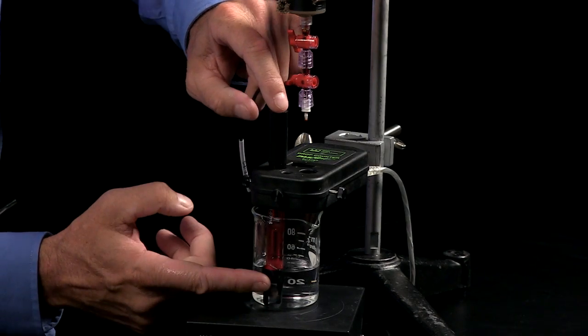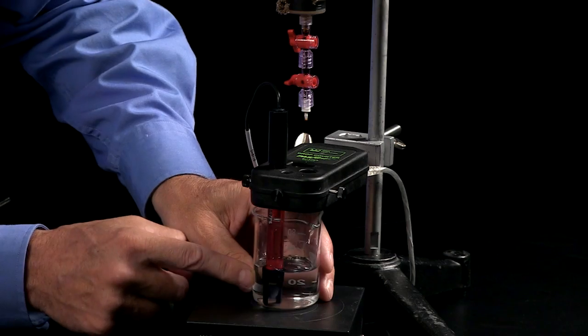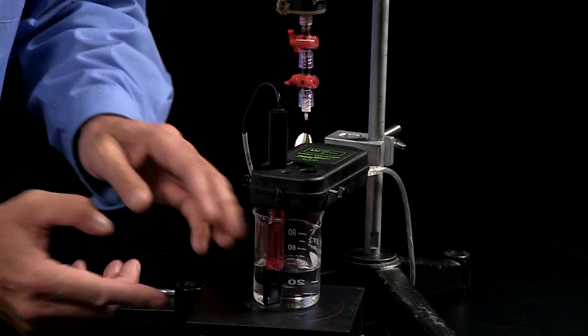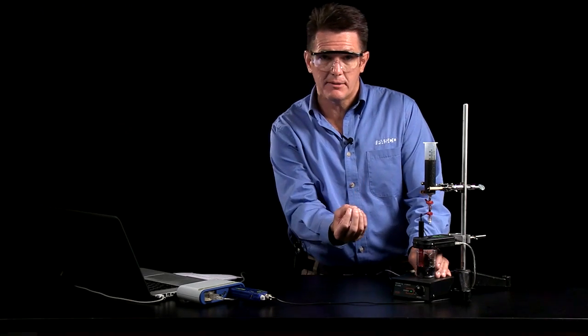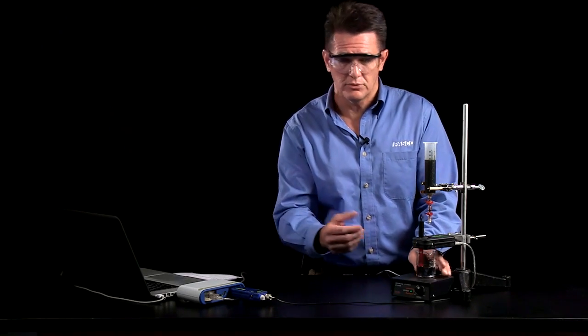This is our ORP probe that I showed you a moment ago. I installed a magnetic stirrer on the bottom of it. Be careful that your solution does cover up the bulb at the very bottom of the ORP probe, otherwise your readings would be off.